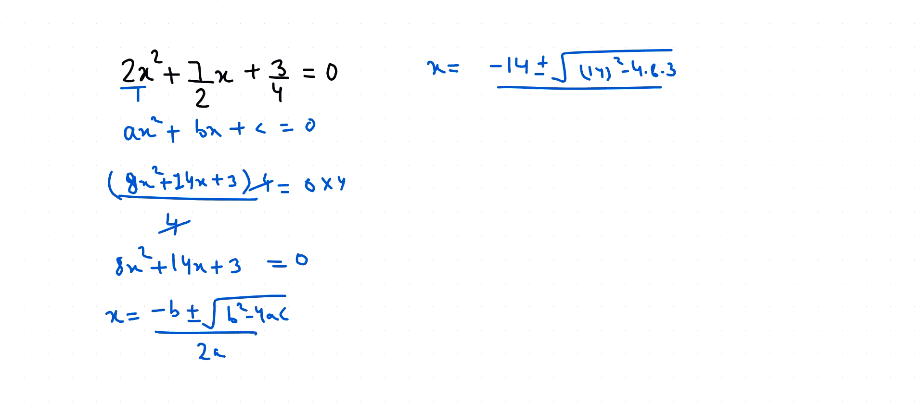So x = -14 ± √(196 - 96) / 16. So x = -14 ± 10 / 16.